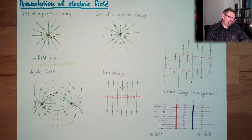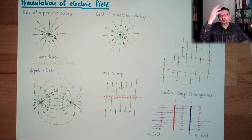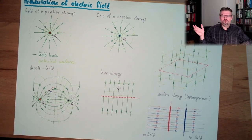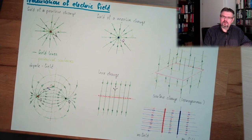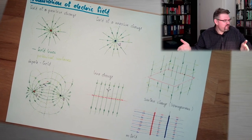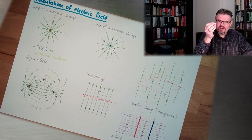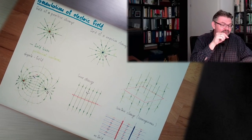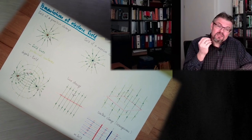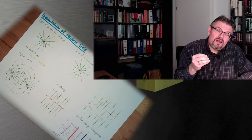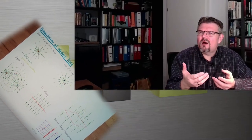Up to now, we always talked about charges placed somewhere with empty space around them. But in reality we have matter everywhere. Matter is built of atoms, and atoms are built of charged particles. We have an electric field and we have charged particles, so there must be an effect of the electric field on matter, or some effect of matter on the electric field. This we're going to explain in the next videos. Next video is about conductive materials in the electric field. Thank you very much for listening. Goodbye.